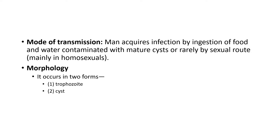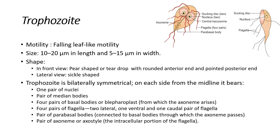There are two morphological forms we can observe: the trophozoite and the cyst. Trophozoite motility — we can see falling leaf-like motility in the saline smear. Size is about 10 to 20 micrometers in length and 5 to 15 micrometers in width. In front view, it looks like a pear shape or teardrop shape.